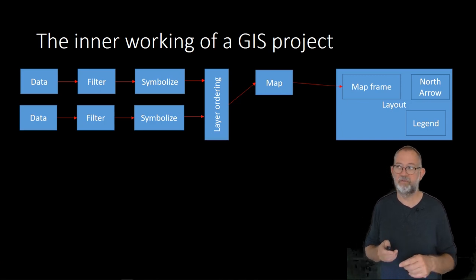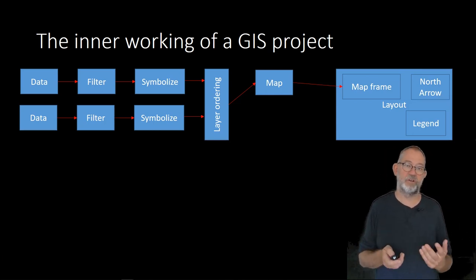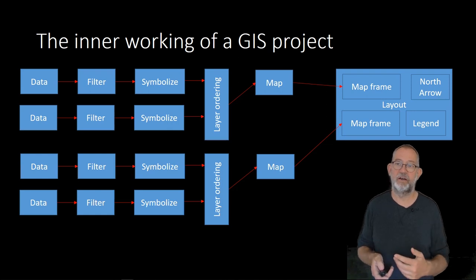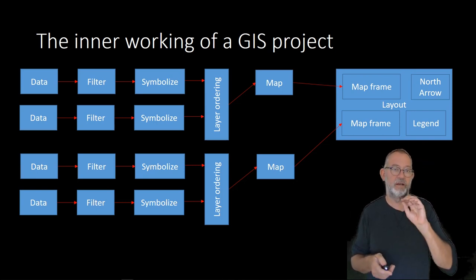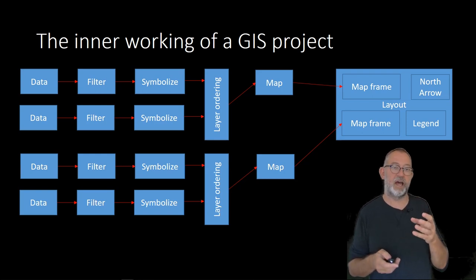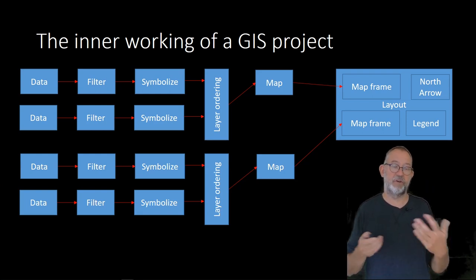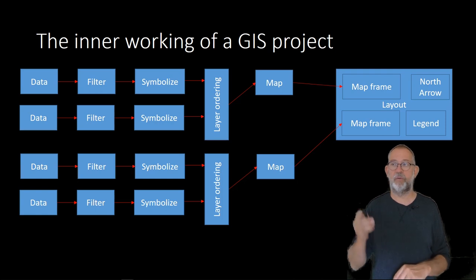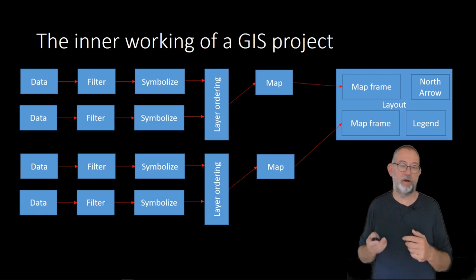For our final output, we take our map and place it as a map frame, then add north arrows, legends, and all those other elements. In many situations we might want another set of layers displayed in another map frame — for instance, one map frame showing zoomed-in soil types of an area, and an overview map showing where we are located within the country. Typically our output will have several map frames coming from several different maps with different contents.